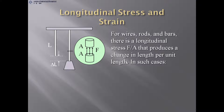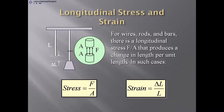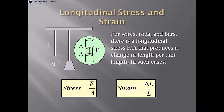Longitudinal stress and strain: for wires, rods, and bars, there is a longitudinal stress F/A that produces a change in length per unit length. Stress = F/A and strain = ΔL / L, where ΔL is the elongation and L is the initial length.